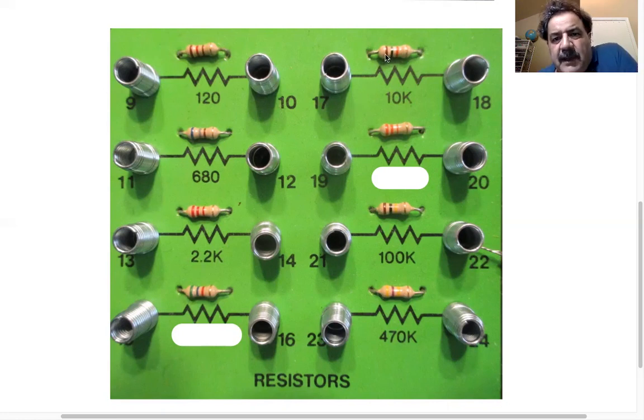This one is brown, brown, black, orange, that is orange there. You can see that it's 1, 0 times 10 to the 3, so that's 10 times 1,000, that's 10,000 ohms.